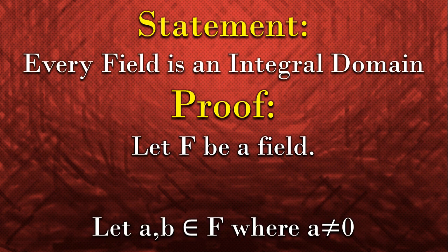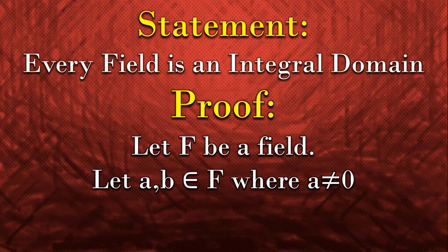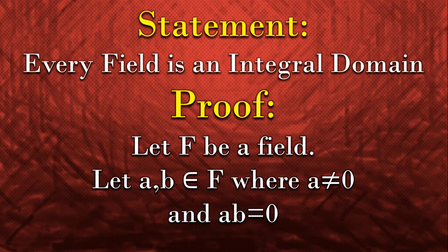So first of all, take two random elements a and b. Both belong to F and a is a non-zero element and the product of a and b is equal to 0. We do not have any information about b right now, whether it is 0 or not.